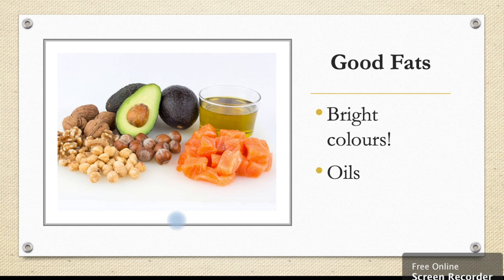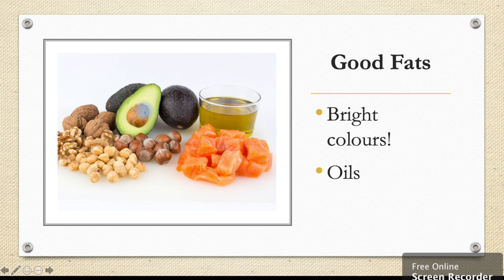Finally we have good fats. As opposed to carbohydrates, good fats are quite bright in colour. We can see oil is a good fat, and these are quite oily foods — salmon and avocado. All of these help us to know that they are good fats.